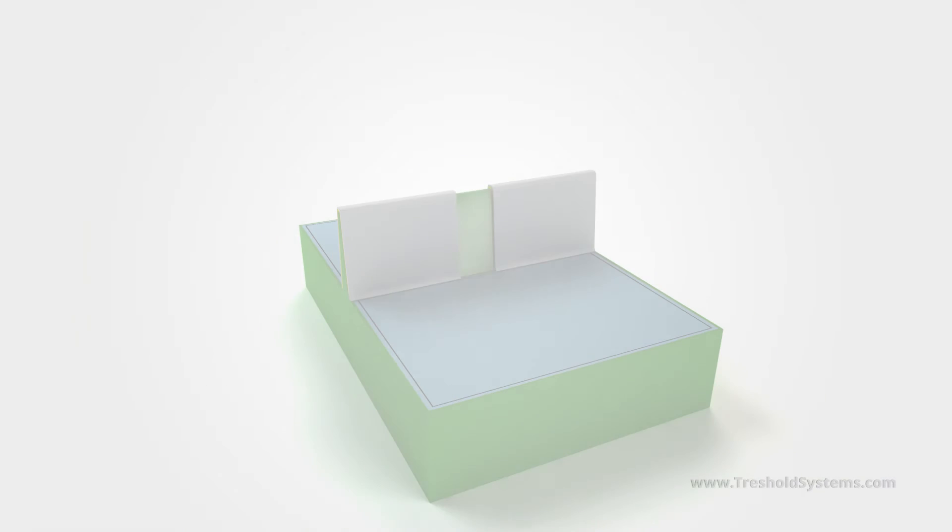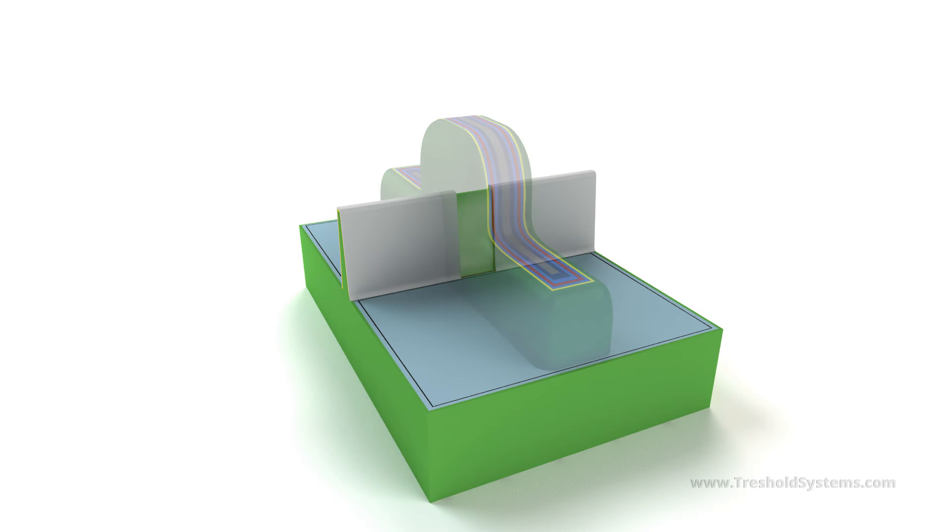When the gate electrode is energized, the region of the Fin located beneath the gate electrode is inverted and forms a conductive pathway between the source and the drain. Although the Fin is a fully depleted device, most of the conduction occurs along the outer edges of the Fin. Watch again as the gate electrode is energized and the transistor turns on.